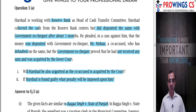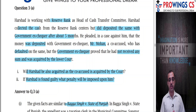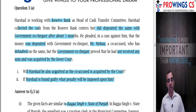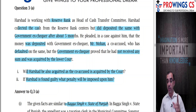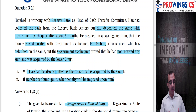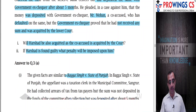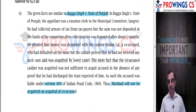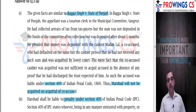Arshad said the government treasurer's failure to register within 5 months was the treasurer's fault, not his. But the government treasurer proved he had not received any money and was acquitted. Two questions: will Arshad also be acquitted since the co-accused is acquitted, and if Harshad is found guilty, what penalty can be imposed? The answer lies in the Bhangha Singh vs. State of Punjab case, which has similar facts.